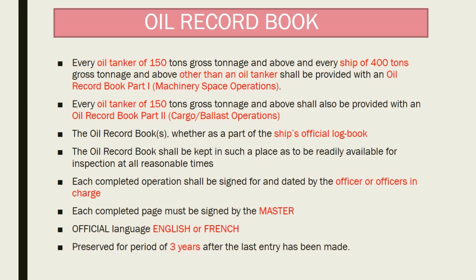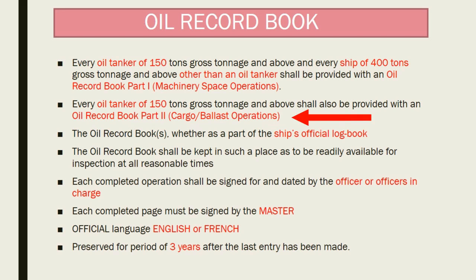Oil Record Book — a very important point for MEO Class 4 examination. Every oil tanker of 150 GRT and above and every ship of 400 GRT and above should have an Oil Record Book Part 1 (machinery space operations). Every oil tanker of 150 GRT and above should also have an Oil Record Book Part 2 (cargo and ballast operations). The oil record book is part of the ship's official log book, should be readily available for inspection at all reasonable times, signed by the officer in charge, and each completed page signed by the master. The official language is English and French, and it should be preserved for 3 years after the last entry.